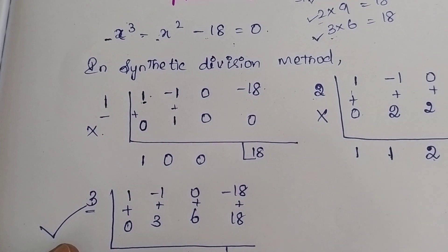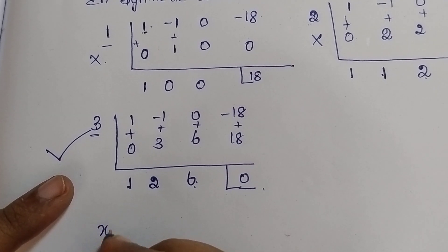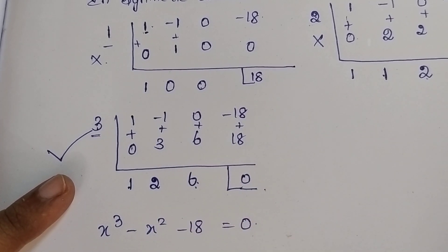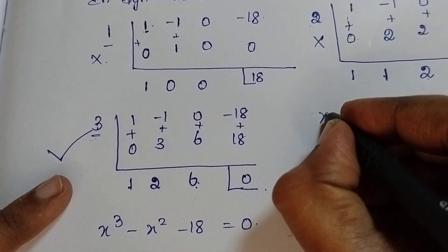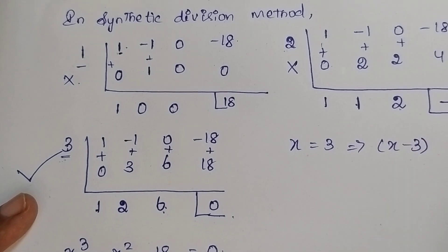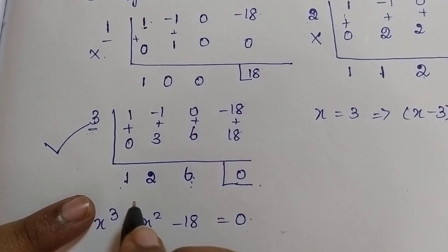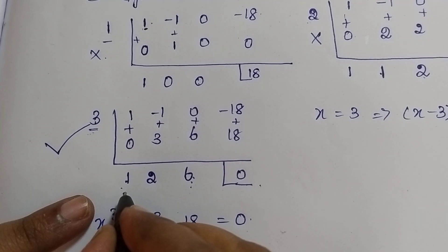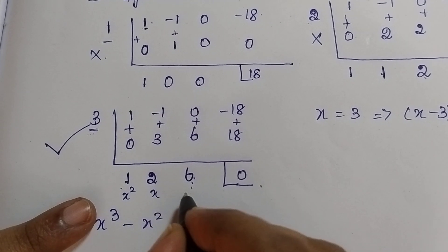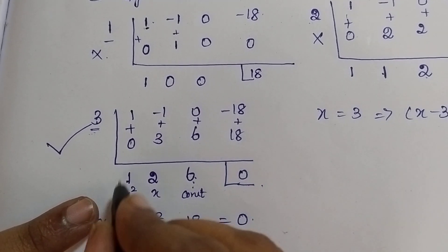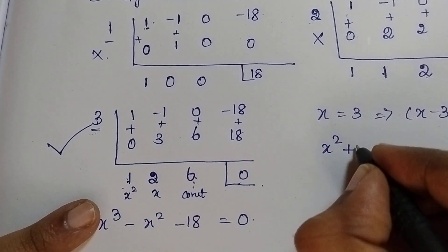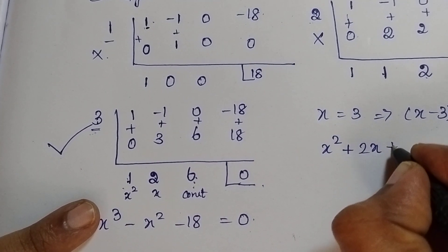So the actual equation is x cubed minus x squared minus 18 equals 0. The factor we found is x equals 3. Therefore x minus 3 is one factor. From this, I can find the second factor. We consider the remaining as x squared. The coefficients are: 1 for x squared, 2 for x, and 6 as the constant. Just compare and write: x squared plus 2x plus 6.